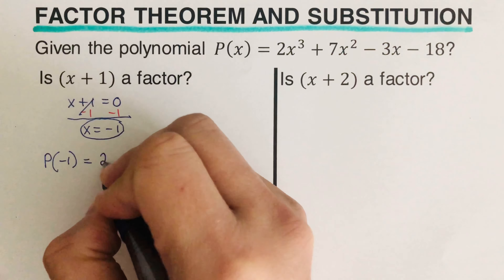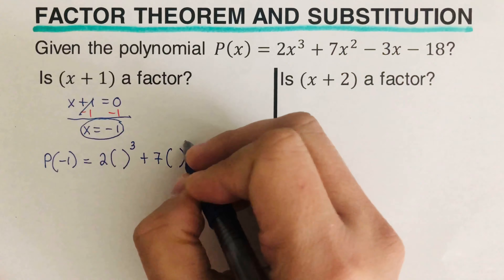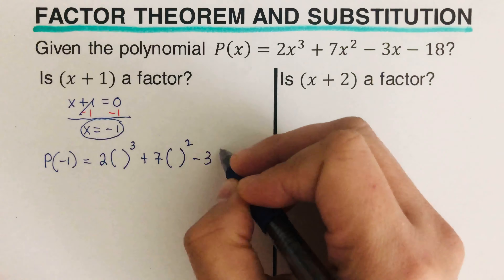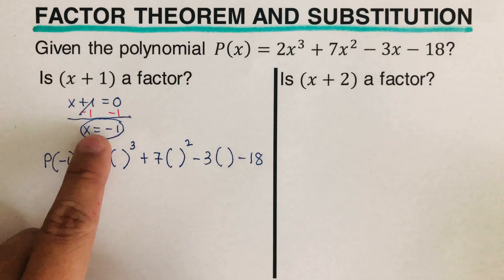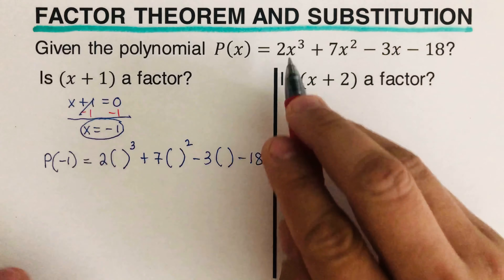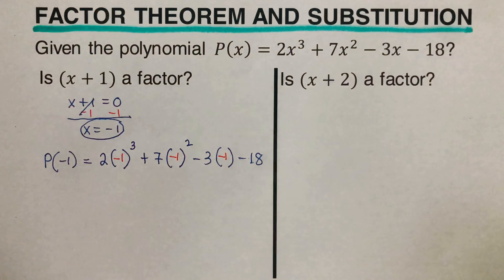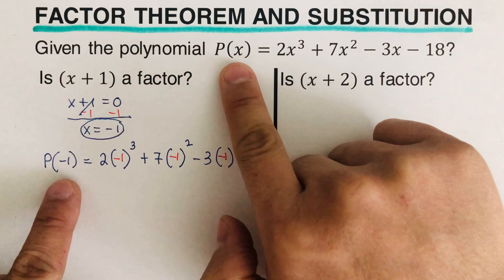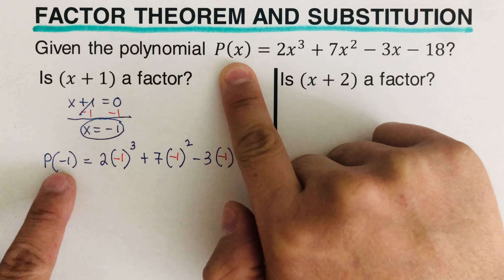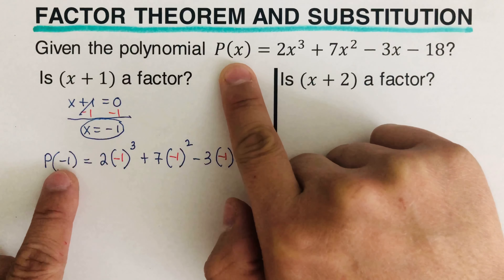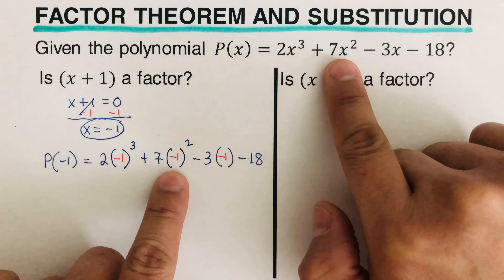That comes out to: two times (negative one) to the third power, plus seven times (negative one) to the second power, minus three times (negative one), minus 18. Our x value is negative one, which we plug into each of the x's in the original function since we're testing whether x plus one is a factor.